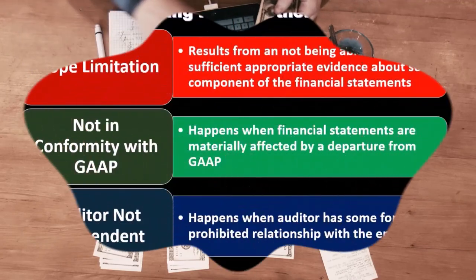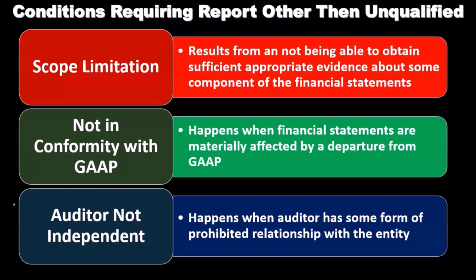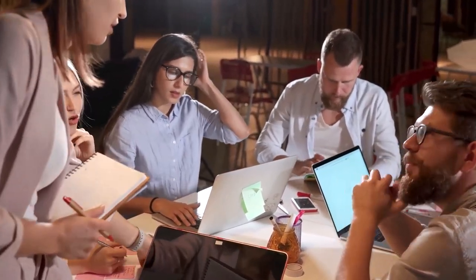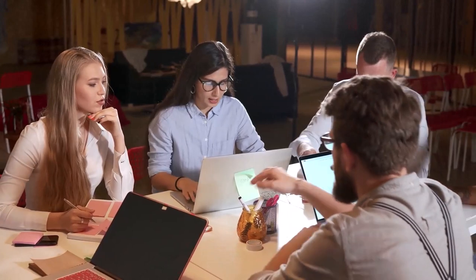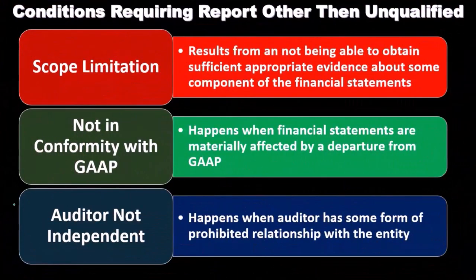Not in conformity with generally accepted accounting principles happens when financial statements are materially affected by a departure from GAAP. Auditor not independent happens when the auditor has some form of prohibited relationship with the entity. Independence is a key component — it needs to be independent specifically in terms of the relationship between the auditor and the client. We also want to have the appearance of independence, because the audit is geared toward an independent third party.